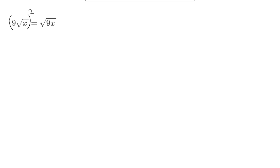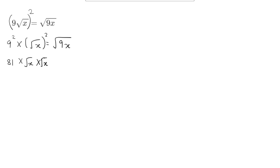Using the properties of exponents, the left hand side can be written as 9 squared times root of x squared, equal to root of 9x. Now 9 squared is 81. And root of x squared can be written as root x times root x. Since root a times root a equals a, root x times root x gets converted to x.